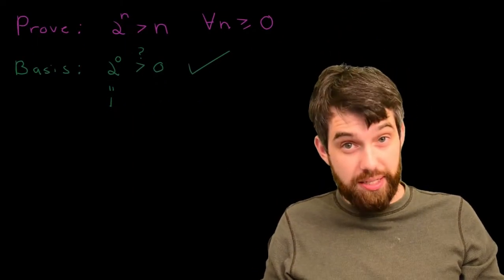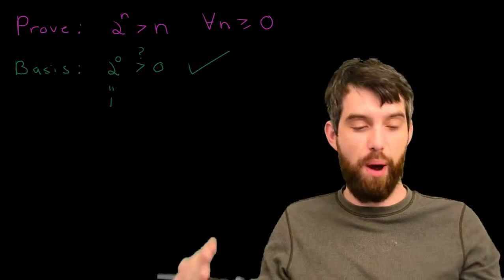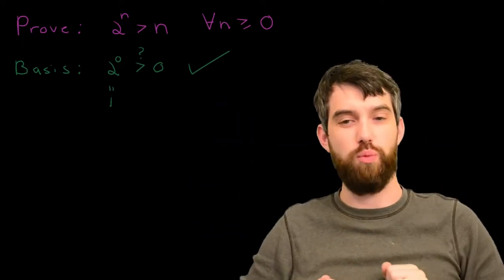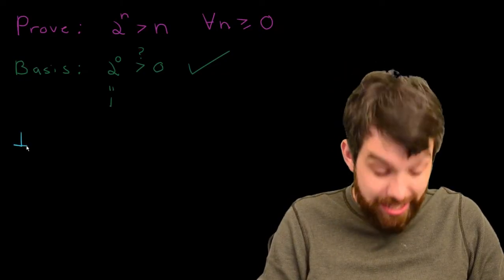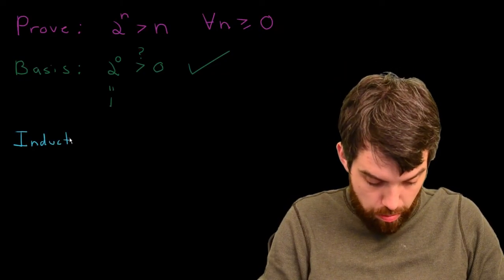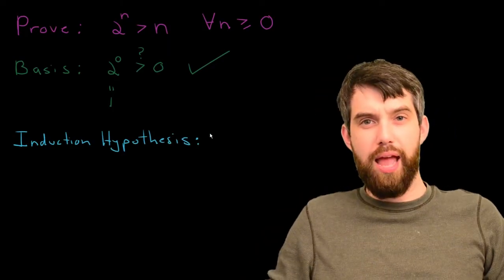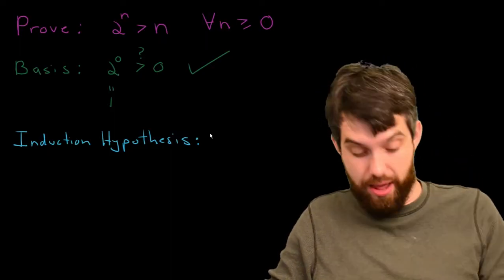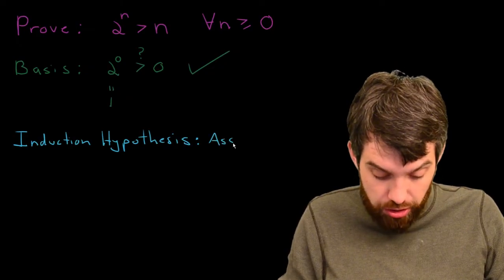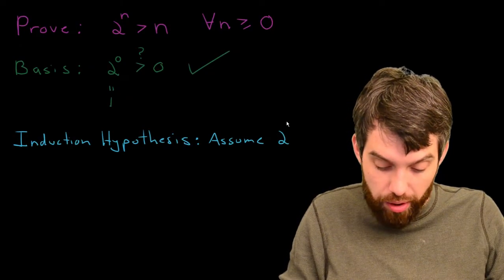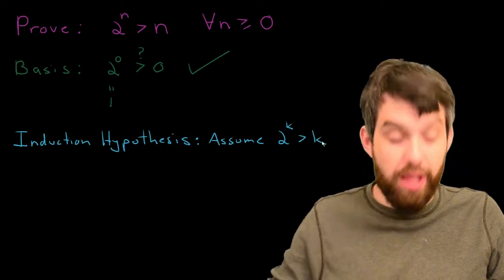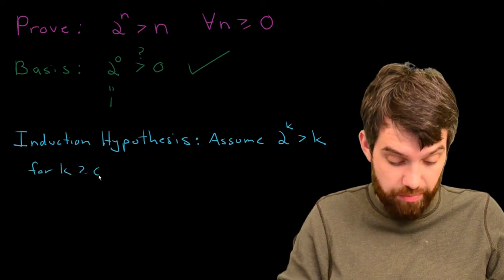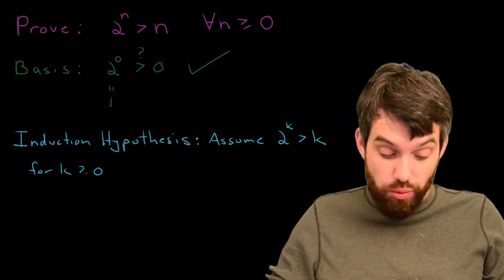After we've done our basis step, what we next need to do is our induction hypothesis. This is assuming it's true at the kth level, and then we're going to show that it's true at the k plus 1th level. So, I'm going to use my induction hypothesis. And what I'm doing is effectively just putting this formula in, but for the particular value k. So, in other words, I am going to assume that 2 to the power of k is going to be greater than k. And this is going to work for some value of k, which is greater than equal to 0. I don't know what value it is, but some value. Alright, so that's what I'm going to assume. That's what I'm allowed to use.